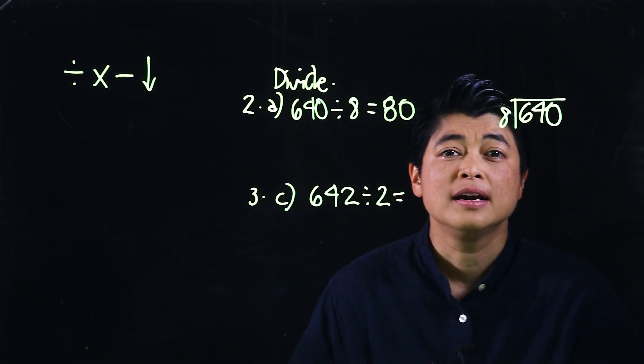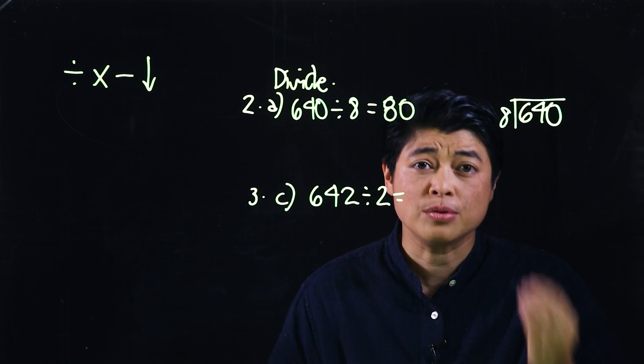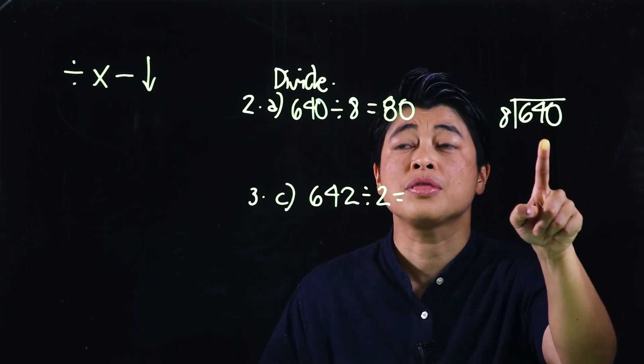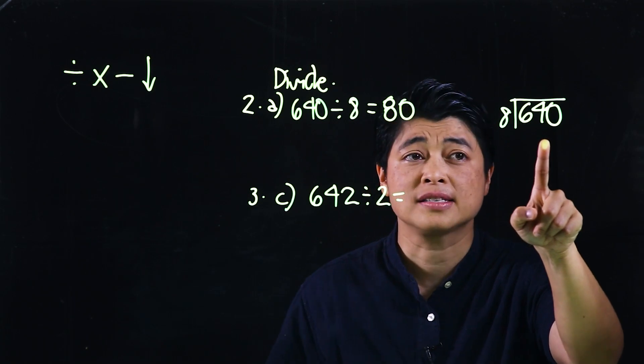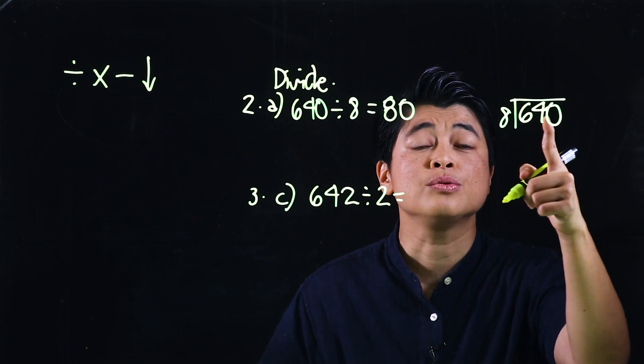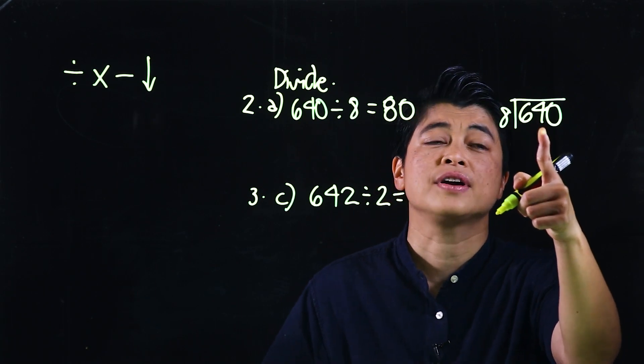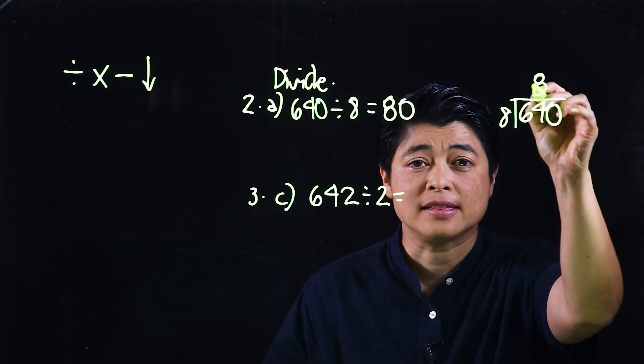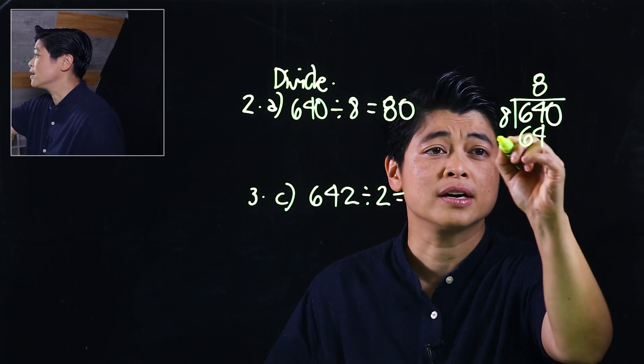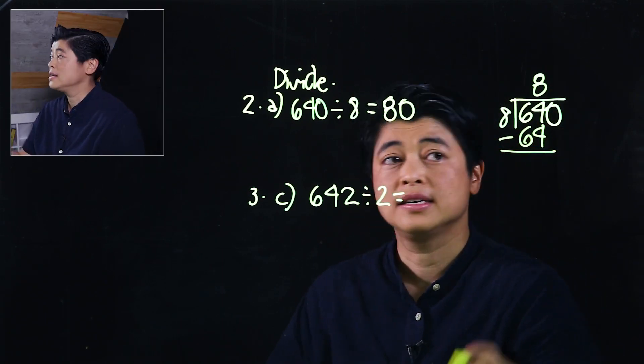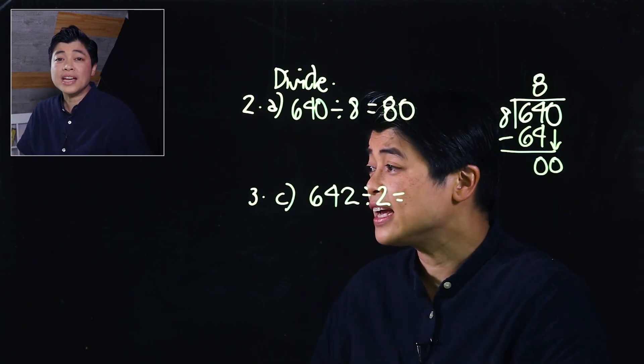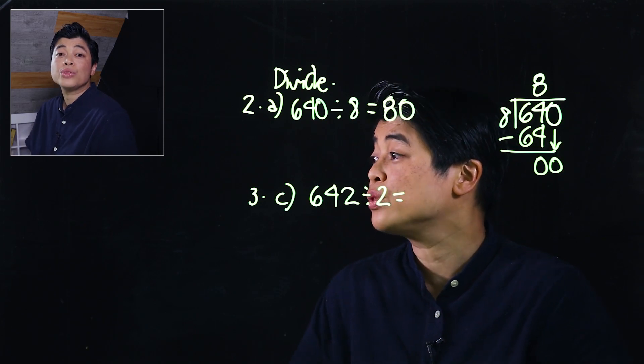But if they can't visually do that, then they have no choice but to write it down and go through the division process. So that means count by 8 until you get to 64 without going over—that happens to be 8. Then 8 times 8 is 64. Then we subtract, then we bring down. A lot of kids will forget to divide this last step.